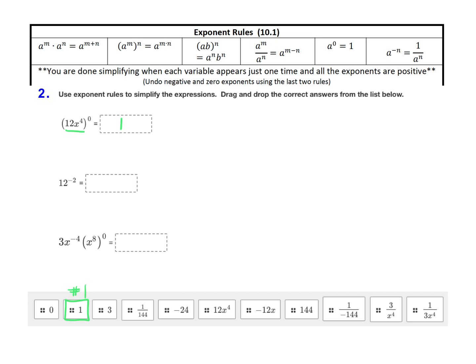I like to think of a negative exponent as being in the wrong place. Right now it's in the numerator, so to get rid of it, we need to move it down to the denominator. This is the same as 1 over 12 to the positive second power. If you take 12 and square it, that's 144, so we get 1 over 144 as our answer.